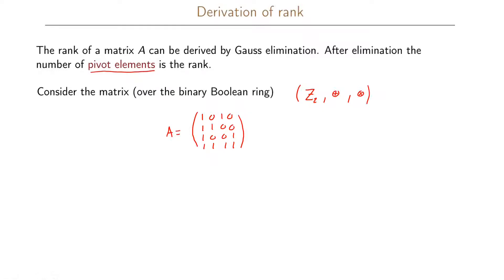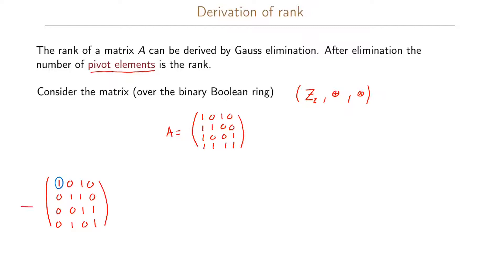Let us do Gaussian elimination. The first row starts with a 1, which will be our pivot element for this row. For all other rows, we add the first row to each respective row. This gives: row 2 becomes 0 1 1 0; row 3 becomes 0 0 1 0 1; row 4 becomes 0 1 0 1. This completes the first step.